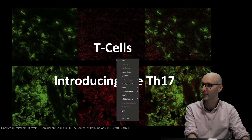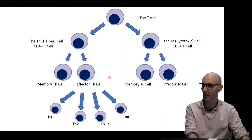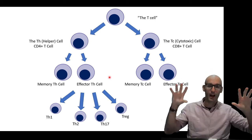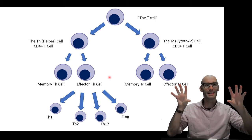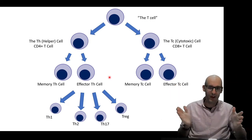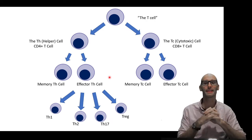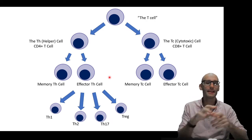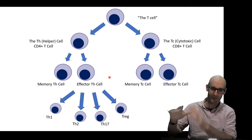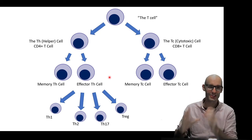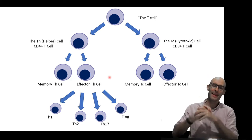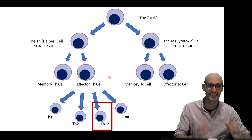Now let's jump into it. We have the T cell, which divides into the two major groups: CD4 positive and CD8 positive cells, which are the helper cells and the cytotoxic T cells. They can then divide down into memory cells and effector cells once activated. The Th effector cell can then turn into several subtypes. We've done Th1, the inflammatory cytotoxic form. We've done Th2, which is the antiparasite but also the allergy form, and also the B cell proliferation form. And now we're moving on to the Th17.